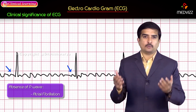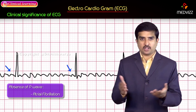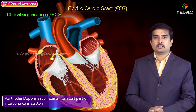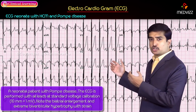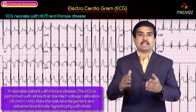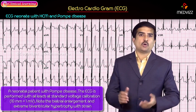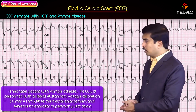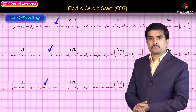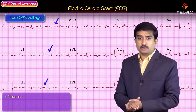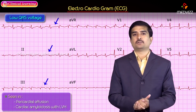Abnormalities in the ECG can help identify structural and functional changes in the heart. Ventricular depolarization starts from the left part of the interventricular septum. A massive QRS complex is associated with Pompe's disease, a glycogen storage disease with cardiomegaly, causing a prolonged QRS complex. Low QRS voltages may be seen in pericardial effusion, cardiac amyloidosis, left ventricular hypertrophy, or ventricular failure.